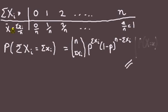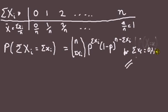To get the distribution of x-bar, note that seeing an outcome of x-bar = 0 is the same as seeing sum of x_i = 0; seeing x-bar = 1/n is the same as seeing sum of x_i = 1. So the probabilities must be the same. We know the distribution of the sum of x_i — it's binomial — and these probabilities therefore carry over directly, for x_i = 0, 1, ..., n.